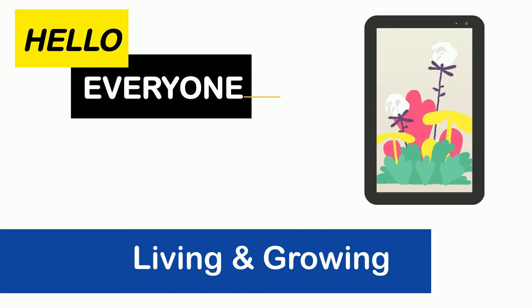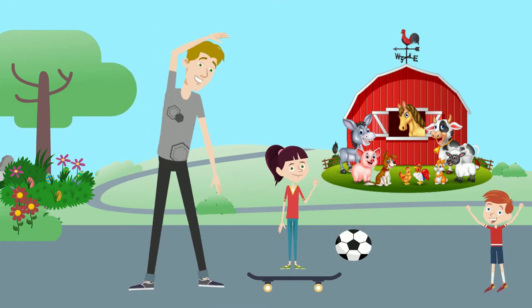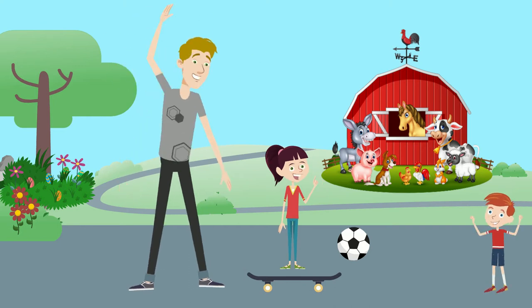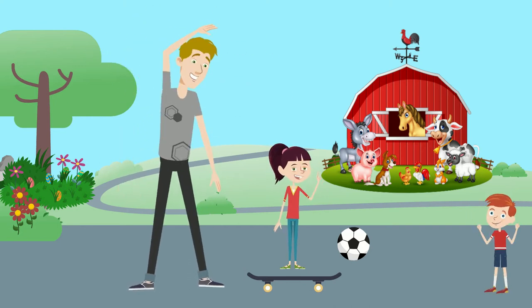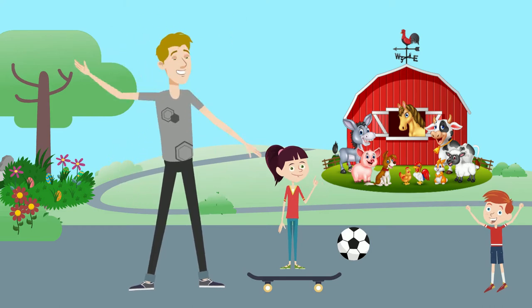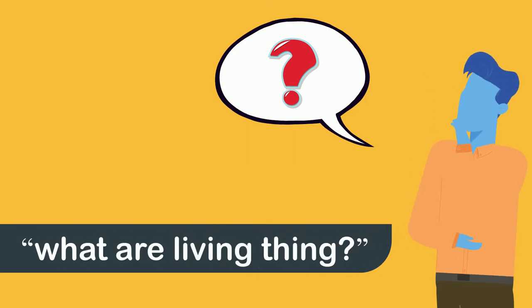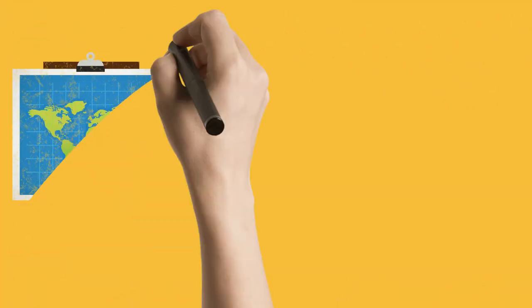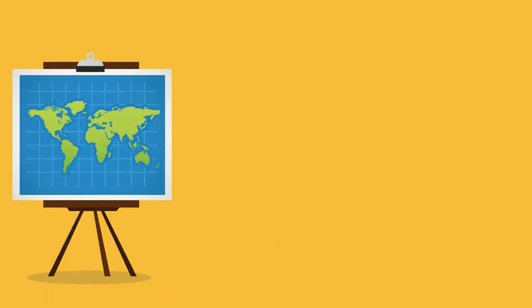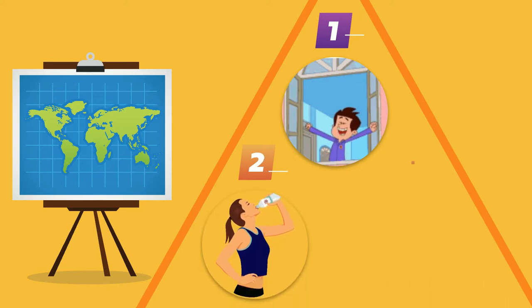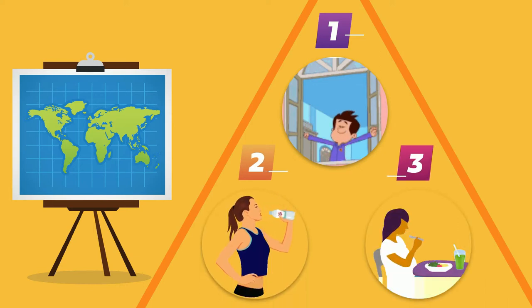We human beings, and the animals and plants we see around us, are all living things. Now you may wonder, what are living things? Living things are those objects in the world which need air to breathe, need water to drink, and need food.